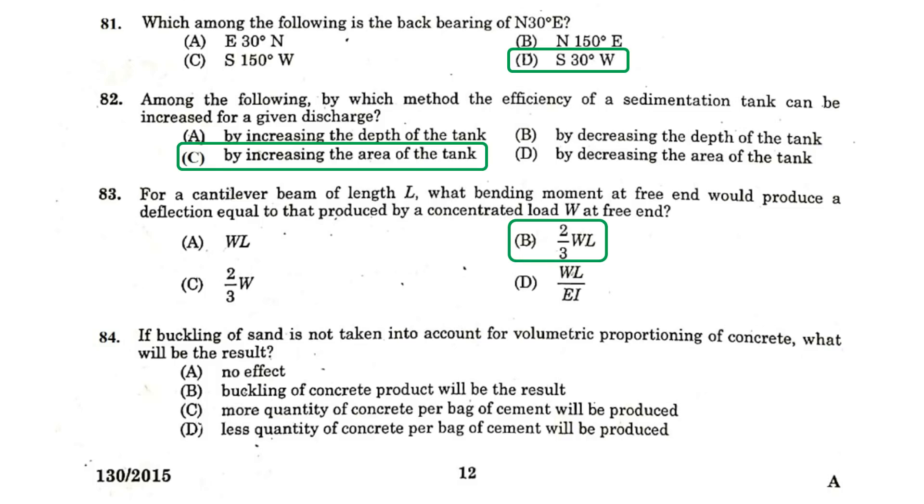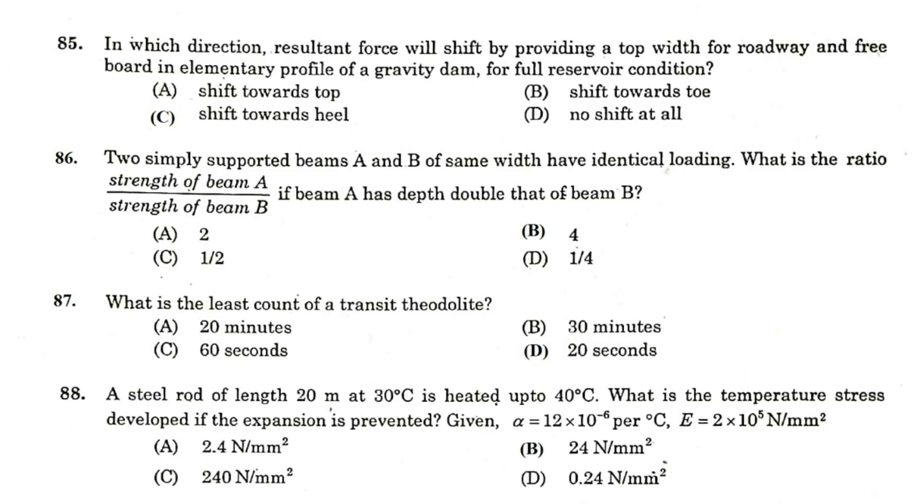If bulking of sand is not taken into account for volumetric proportioning of concrete, what will be the result? Less quantity of concrete per bag of cement will be produced. In which direction resultant force will shift by providing a top width for roadway and free board in elementary profile of a gravity dam for full reservoir condition? It shifts towards the heel.